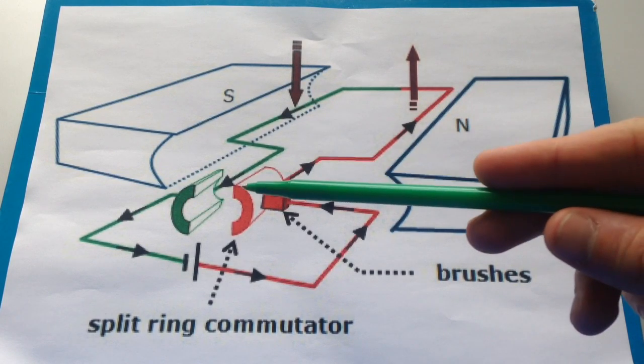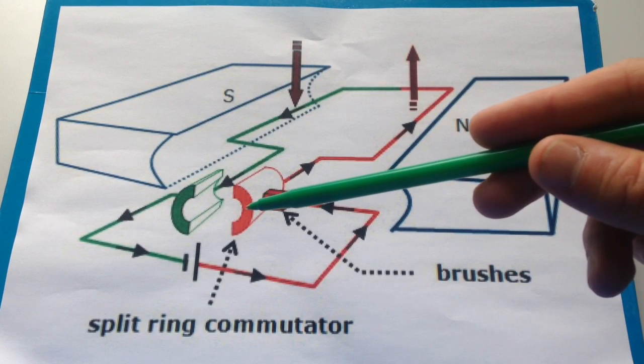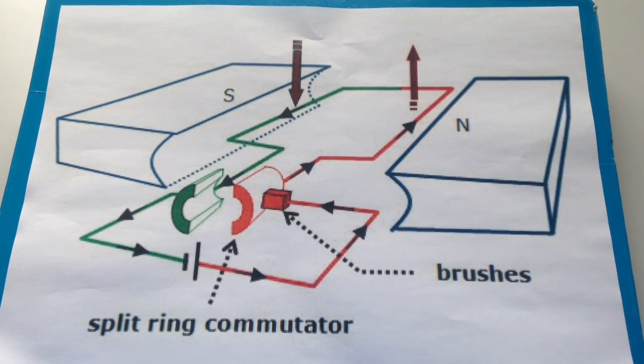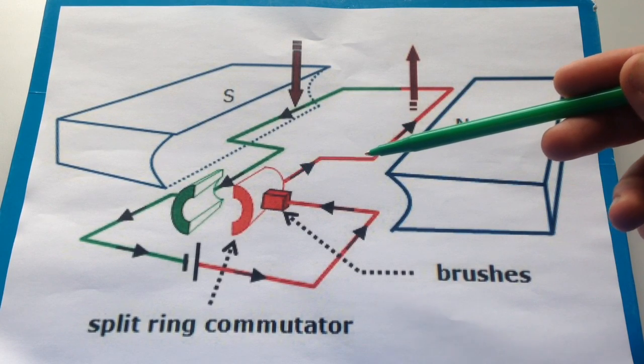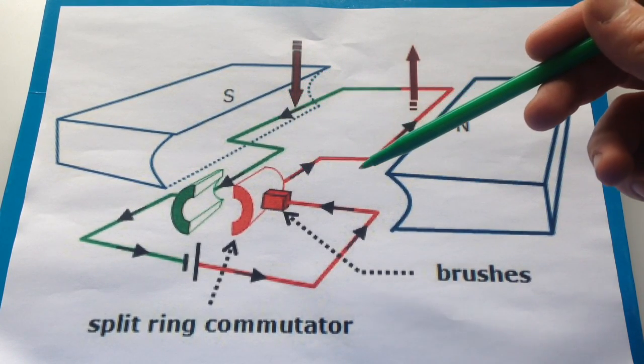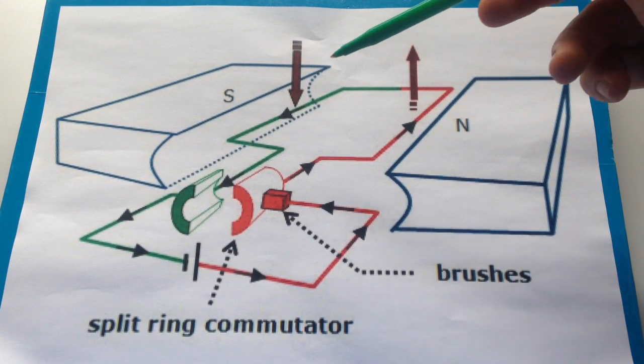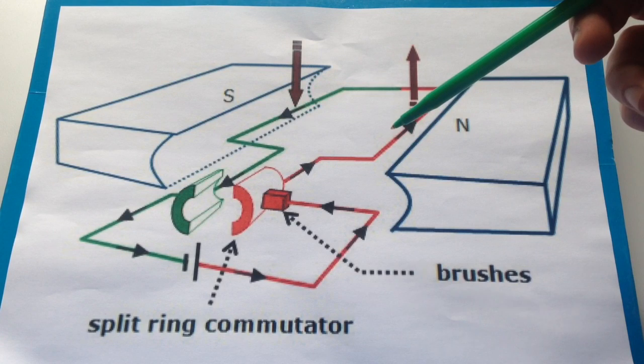Now, remember the motor you built. Once it's been spun 90 degrees, the brushes will lose contact with the split ring. And so the current will stop flowing. And now the important bit. The momentum of the motor will carry on spinning until this side is closer to the south pole of the magnet.